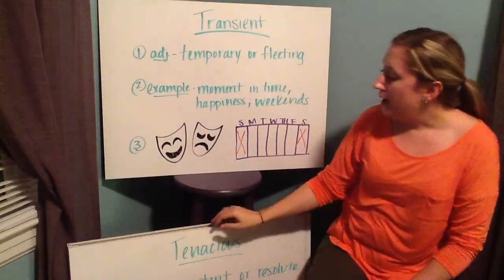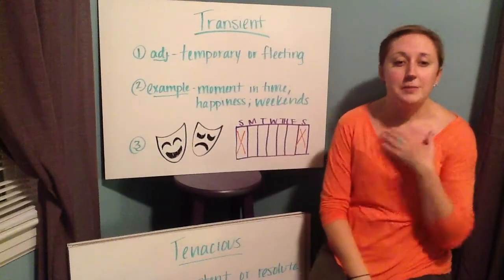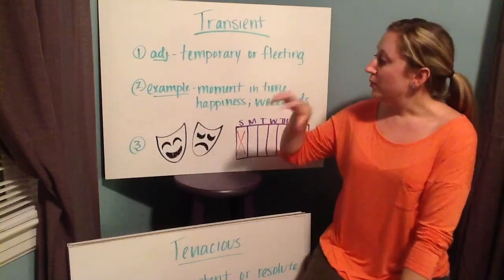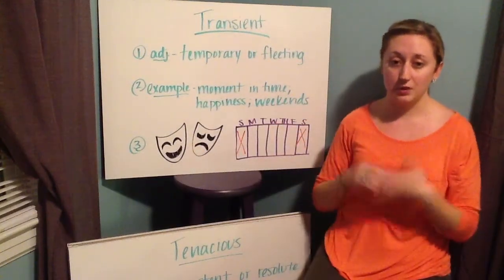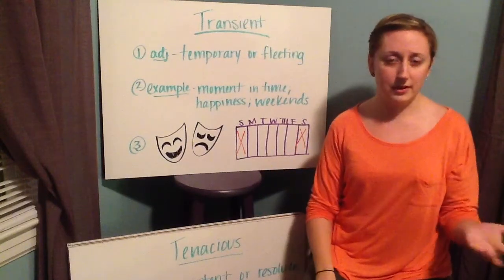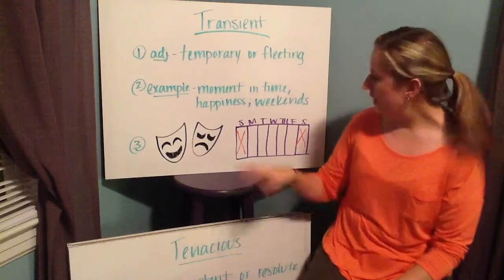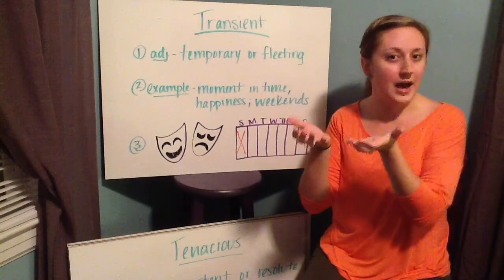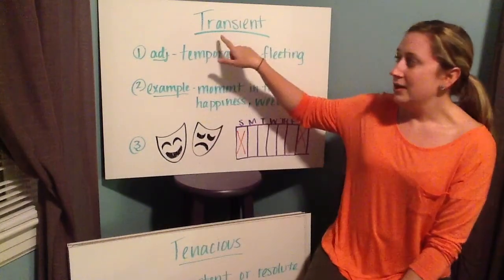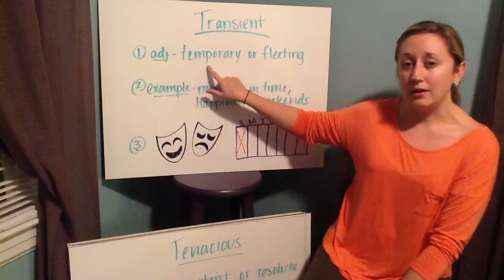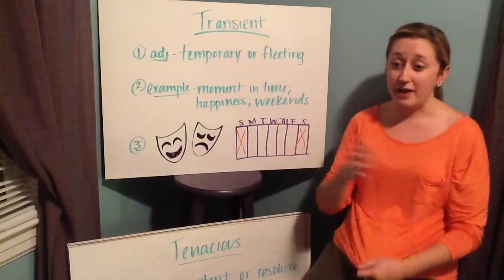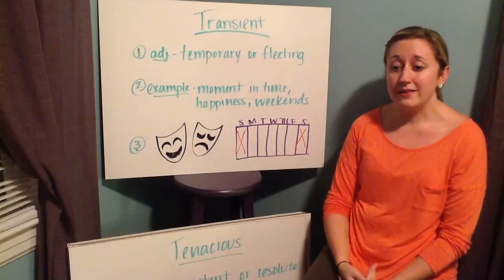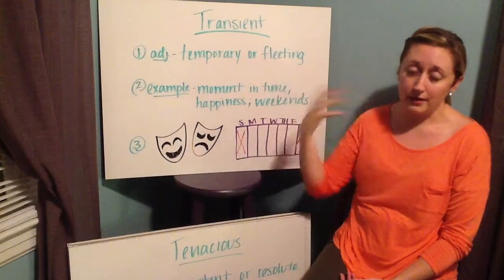Your next word is transient. The definition is temporary or fleeting — fleeting means something that is escaping you, moving away quickly; temporary means something that doesn't last very long. Examples include moments in time: sometimes you'll be really excited for a moment, then two minutes later you don't feel that same way. People say happiness is fleeting because some people are really happy for just a few moments, and it's hard to stay that happy all the time. When you think about weekends — two days sandwiched between five long work days — our weekends are transient because they escape us quickly.